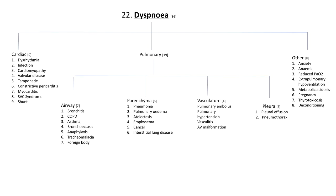The causes of dyspnea can be separated into the following categories: cardiac on the left-hand side, pulmonary in the middle, and then others. Under pulmonary, we can further stratify into those involving the airway, the parenchyma, the vasculature, and the pleural. So let's dig into this.